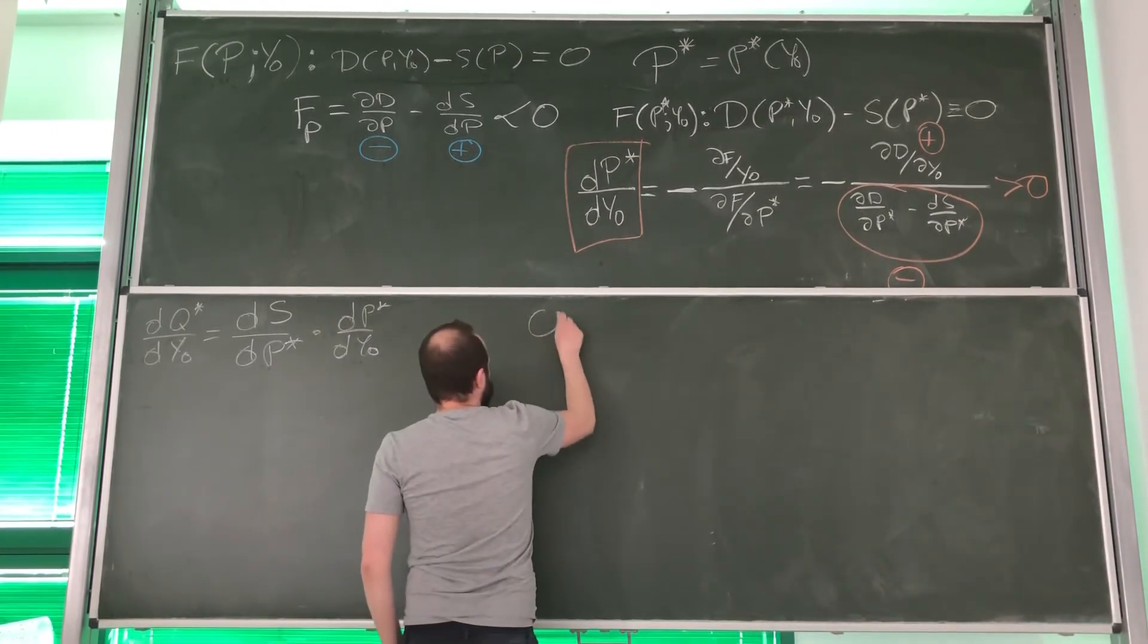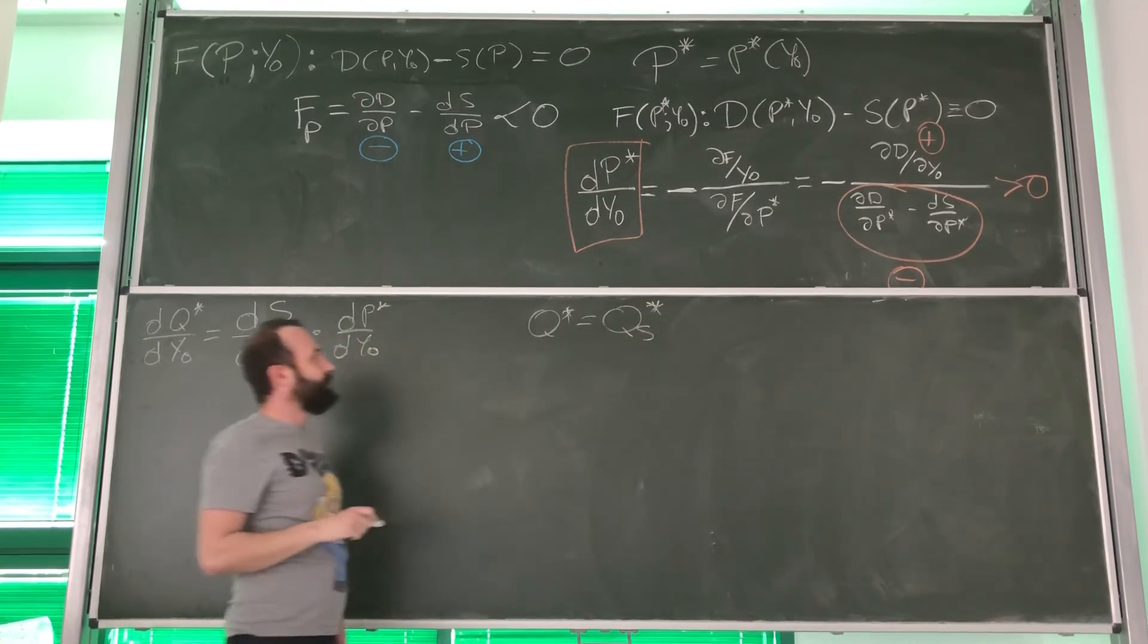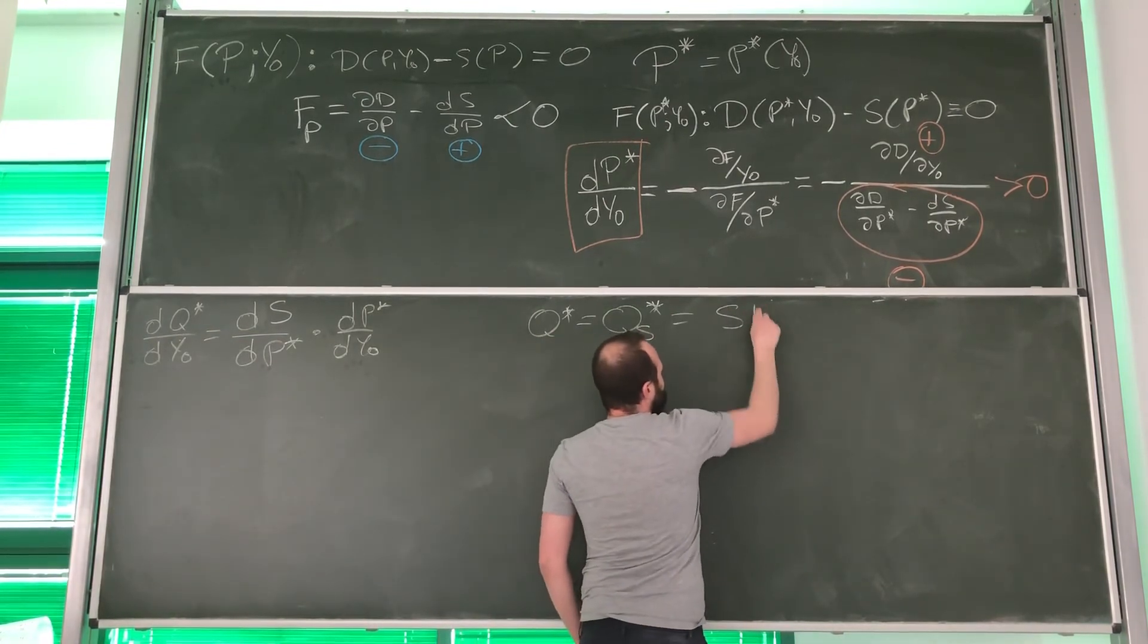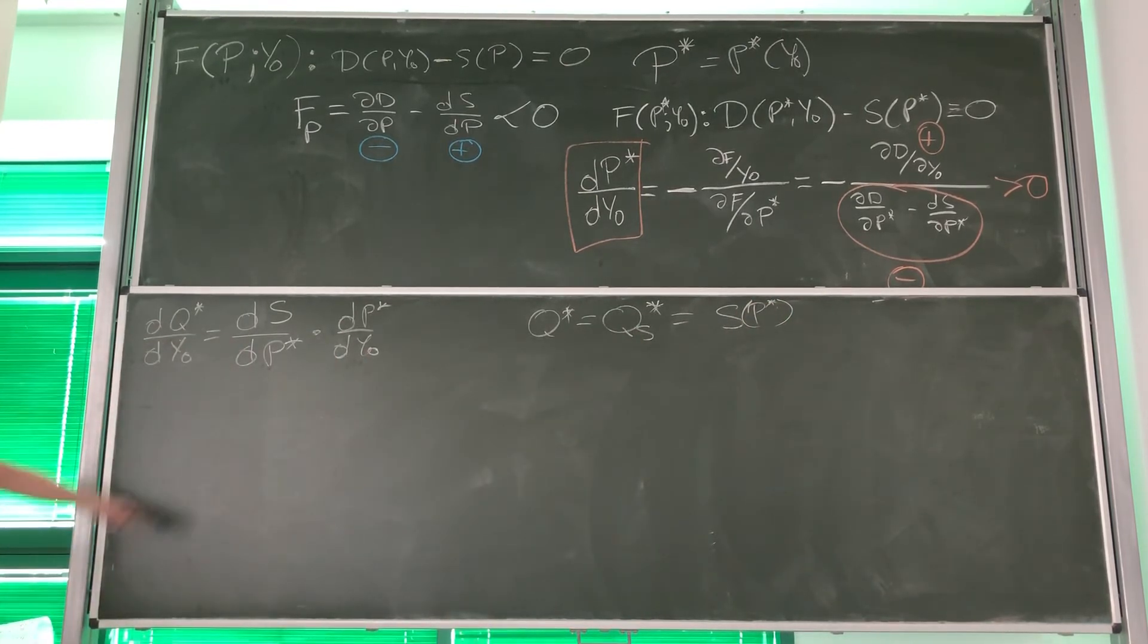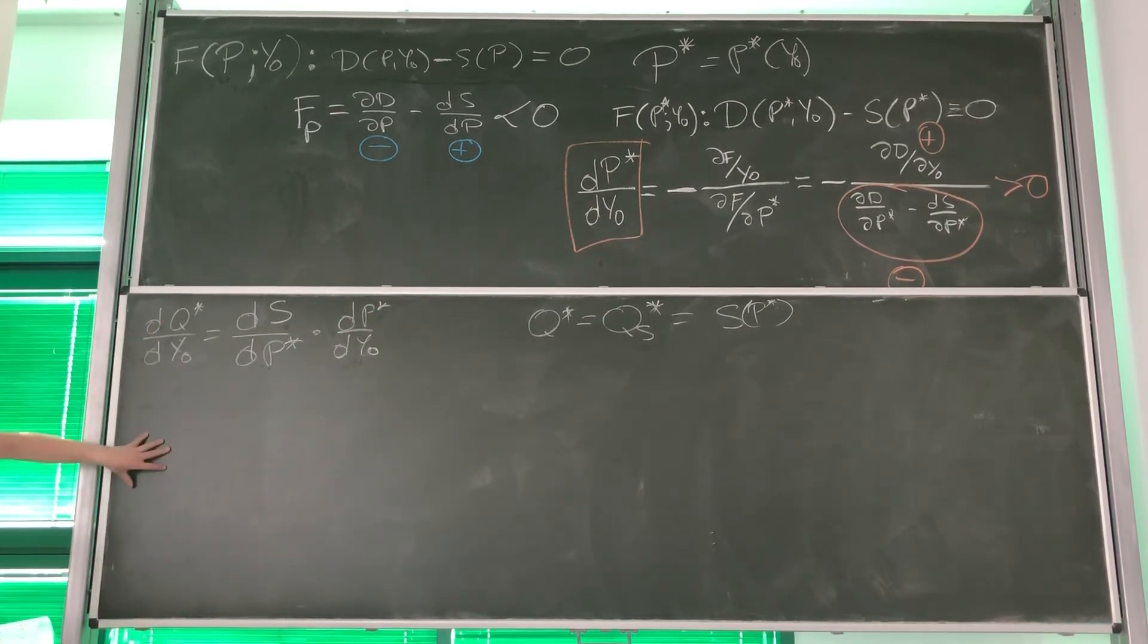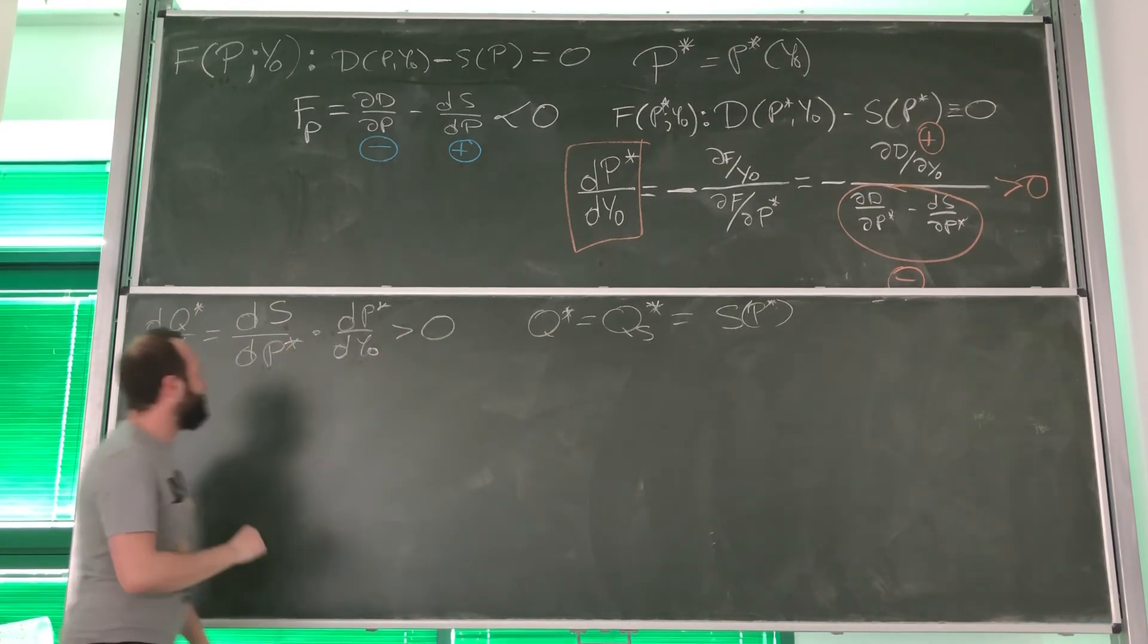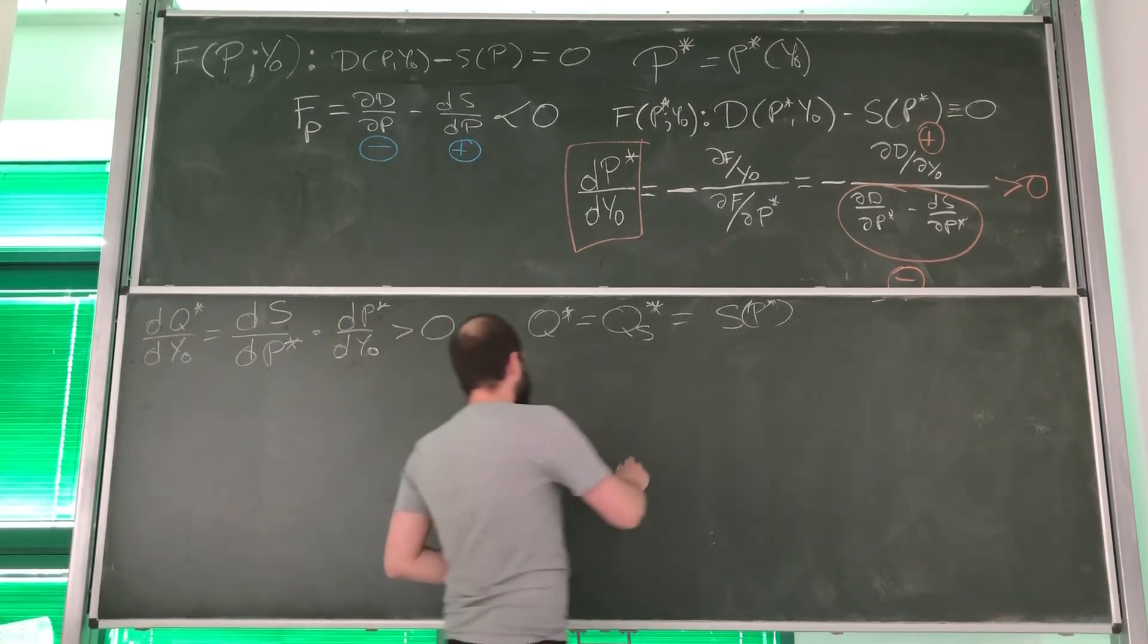Look, in equilibrium, equilibrium quantity is equal to quantity supplied and quantity demanded. But what is important to us, quantity supplied in equilibrium is simply equal to supply given equilibrium price. Look, those two cancel each other out. If we substitute S for Q, we are getting the result. And we see that because this is positive and this is positive, this must be positive as well.